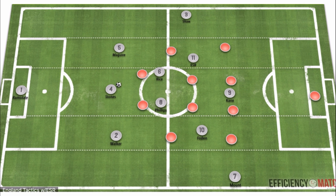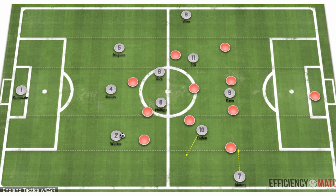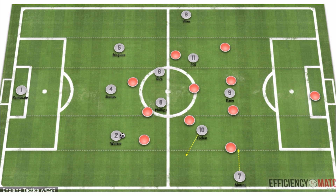Moving into the midfield third, we see some wide area rotations. First we see Kyle Walker coming narrow through the half space, creating a back three in the initial buildup. Walker is there for circulation and because of his strong transition qualities in the defensive phase — his defensive ability is crucial. This creates a very large distance between Kyle Walker and Mason Mount, which gives freedom for Foden and Mason Mount to interchange their positions diagonally, creating movements to facilitate better opportunities for their qualities on the ball and put them in different spaces they're well equipped to deal with.